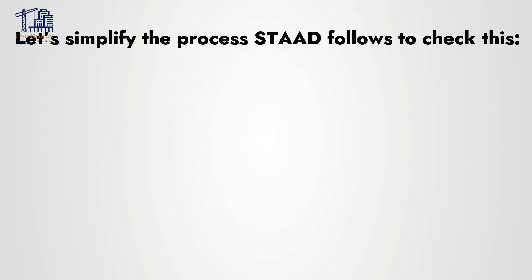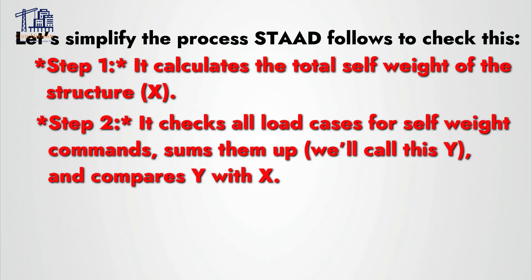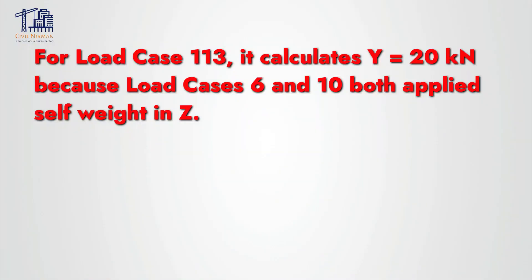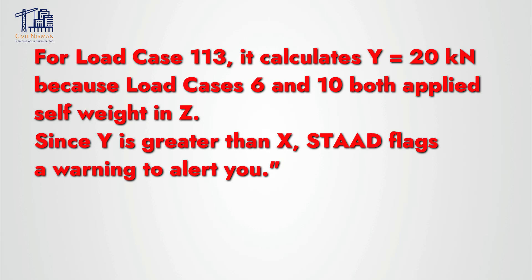Let's simplify the process STAAD follows to check this. In Step 1, it calculates the total self weight of the structure — let's call this X. In Step 2, it checks all the load cases for self weight commands, sums them up — let's call this Y — and compares Y with X. In our example, the structure weight X is 10 kilo Newton, but for the load cases it calculates Y as 20 kilo Newton, because Load Cases 6 and 10 both applied self weight in the Z direction. Since Y is greater than X, STAAD flags this as a warning.